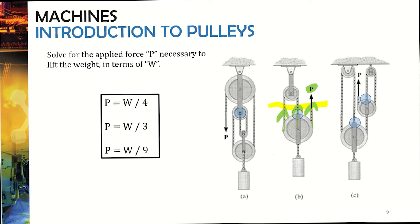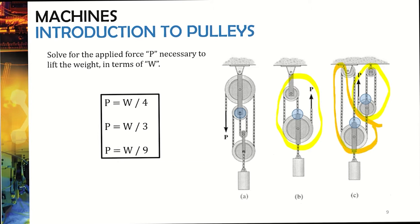For question C, why is P equal to W/9? Looking closely, one portion of the system is actually the same configuration as question B. The bigger piece over here is also the same. As a result, we essentially have W/3 in the top and W/3 in the bottom, and these multiply together to give W/9. The mechanical advantages of these systems are 4, 3, and 9, respectively.